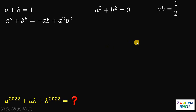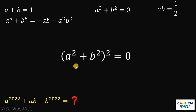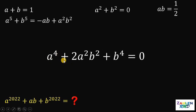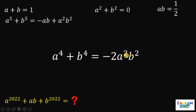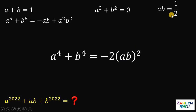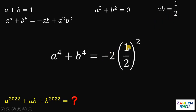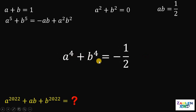Now we continue the process to reach a raised to 2022 plus b raised to 2022. Squaring a squared plus b squared equals 0 on both sides gives a raised to the fourth power plus 2a squared b squared plus b raised to the fourth power equals 0. So a raised to the fourth power plus b raised to the fourth power equals negative 2 times (ab) squared equals negative 2 times 1/4, which is negative 1/2.